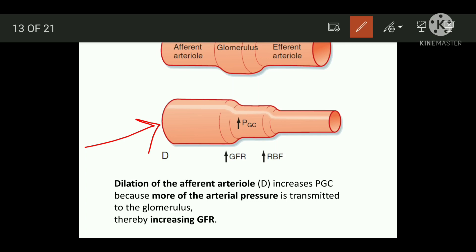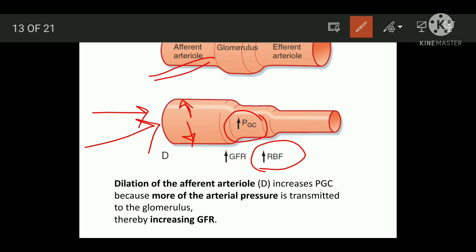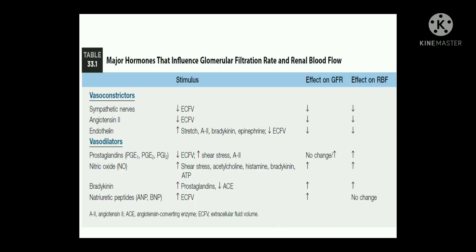The fourth scenario is dilation of the afferent arterioles. Whenever there is dilation of the afferent arterioles, this will lead to an increase in renal blood flow — more renal blood flow going in — and this will lead to an increase in glomerular capillary pressure, which will also cause an increase in GFR. Remember these — they are gems of MCQs asked 100% in each competitive exam.